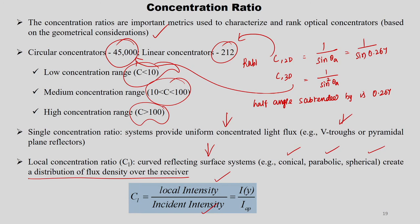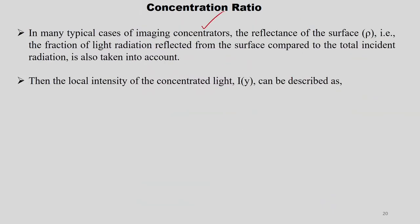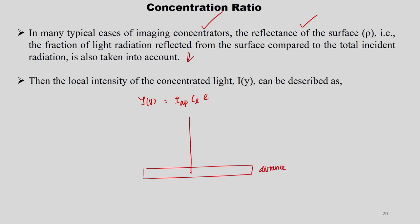The local intensity I(Y) is calculated as I(Y) = I_AP × C_L × ρ, where C_L is the local concentration ratio and ρ is the reflectance. In typical imaging collectors, the reflectance — the fraction of radiation reflected from the surface compared to total incident radiation — is also taken into account. On a graph, Y is the position along the receiver and the intensity I(Y) is evaluated at that point.